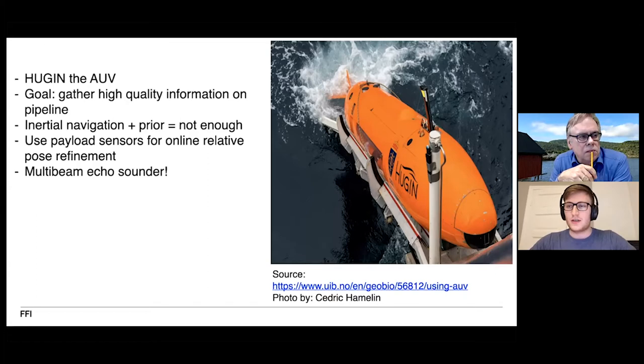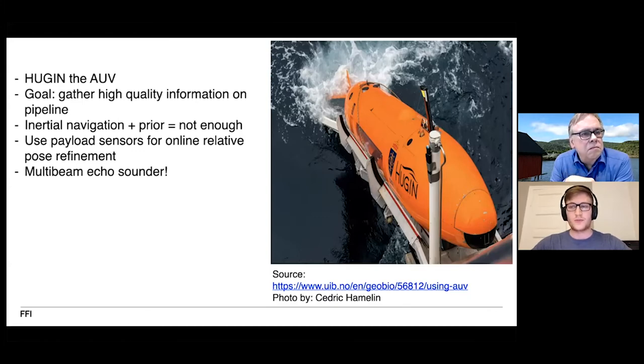One problem with this approach is that you might not have sufficiently accurate prior information on where the pipeline is located beforehand, and even though you think you have it, you can also have sea currents which will move the seafloor pipeline so your believed location might be inaccurate. You will also inevitably have drifting in the inertial navigation system of Hugin, so throughout its mission he might be somewhat offset to the true location of the pipeline. All of this can result in Hugin being poorly placed according to the pipeline, and thus all of the images that you take of the surrounding area might not even contain pipeline.